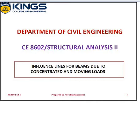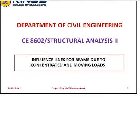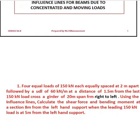In this video lecture I am going to solve one problem with a combination of distributed and concentrated loads. The problem is: 4 equal loads of 150 kilo Newton each, equally spaced at 2 meter apart, followed by a UDL of 60 kilo Newton per meter at a distance of 1.5 meter from the last 150 kilo Newton load, cross a girder of 20 meter span from right to left. Using the influence line, calculate the shear force and bending moment at a section 8 meter from the left hand support when the leading 150 kilo Newton load is at 5 meter from the left hand support.